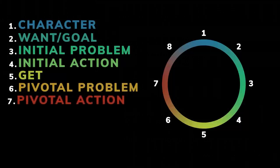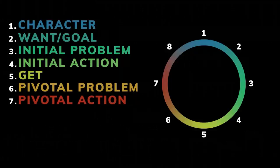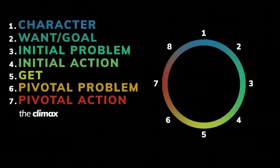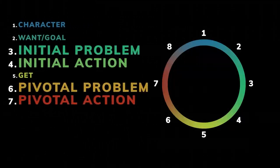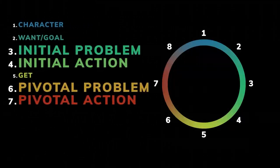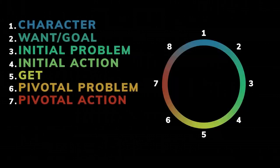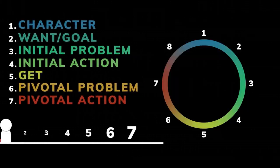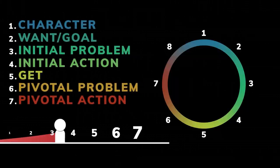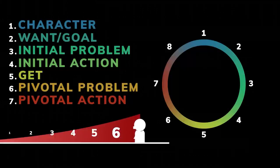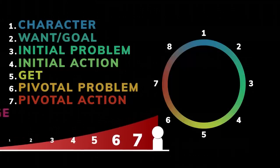Seven: pivotal action. Now your character must face this larger problem. They must take extreme action to handle the problem created at the six and survive. This beat is the climax — it is the climax of a full story, and it can also be the climax of an act. Notice that the six and seven mirrors the three and four. This is important because this is how you create progressive complications. Your character will face more challenging obstacles as they make progress, which creates continued conflict and keeps your audience engaged.